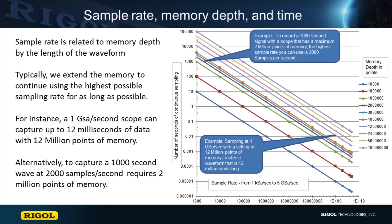The faster the sample rate, the shorter the captured wave is in time. The more memory you can utilize, the more time you can store. The chart to the right shows a line color for different memory depth values from 10,000 points to 100,000,000 points. Along the x-axis is the sample rate settings from 1 kS per second up to 5 gigasamples per second. The y-axis shows how long in time can be continuously captured with the memory depth and sample rate settings. Note that these are all log scale axes.